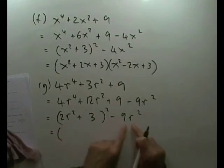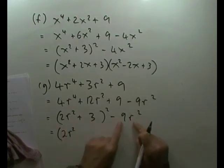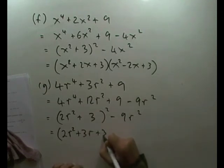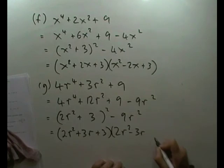So it's going to be this, take away that, and this, plus that. I think I'll put it the other way around. So I've got 2r squared, that being the square of 3r, plus 3r plus 3, times 2r squared, minus 3r plus 3.